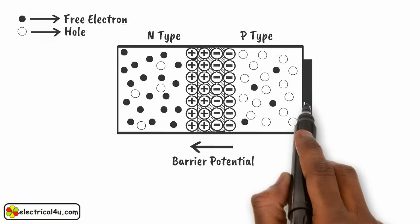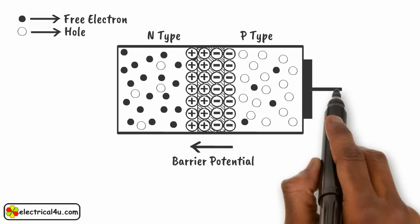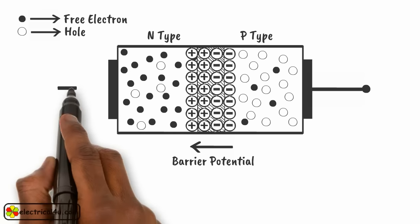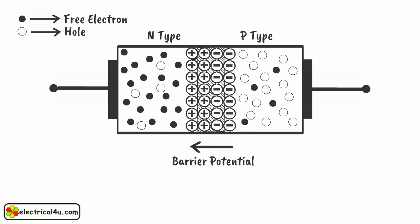Now we connect links to the ends of each material. We have made the basic P-N junction diode.